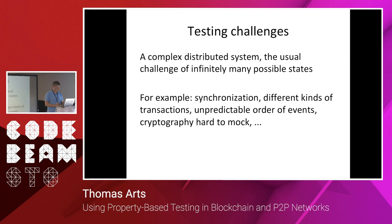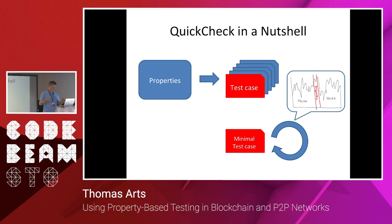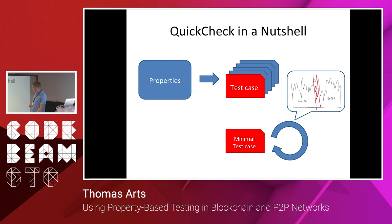So how do we do it? We use QuickCheck. Since many of you have already heard about it, it generates tests instead of writing them manually — you make a property and say the property should hold. QuickCheck in a nutshell: you write your property, automatically generate tests until you find a failing one. The blue ones pass, the red one is a failing test case. You take that randomly generated failing test case and shrink it to the minimum test case that fails, in order to make debugging much easier. You need that because there is a lot of noise in your test case that is not necessary to provoke the error.